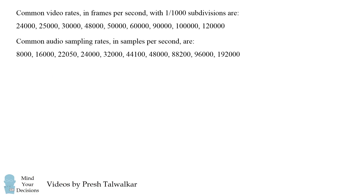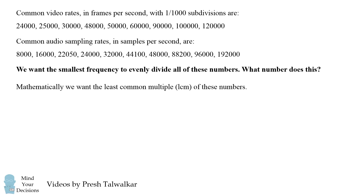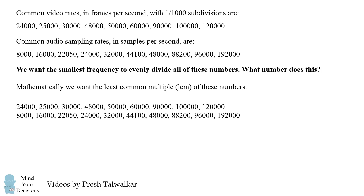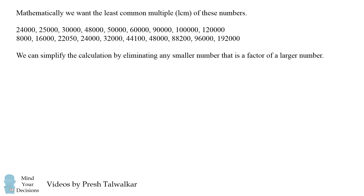We start out with these frame rates and sampling rates, and we want the smallest frequency that will divide all of these numbers. Mathematically, we're talking about the least common multiple of all of these numbers. It actually turns out to be something not too difficult to calculate — we can simplify the calculation by eliminating any smaller number that's a factor of a larger number.